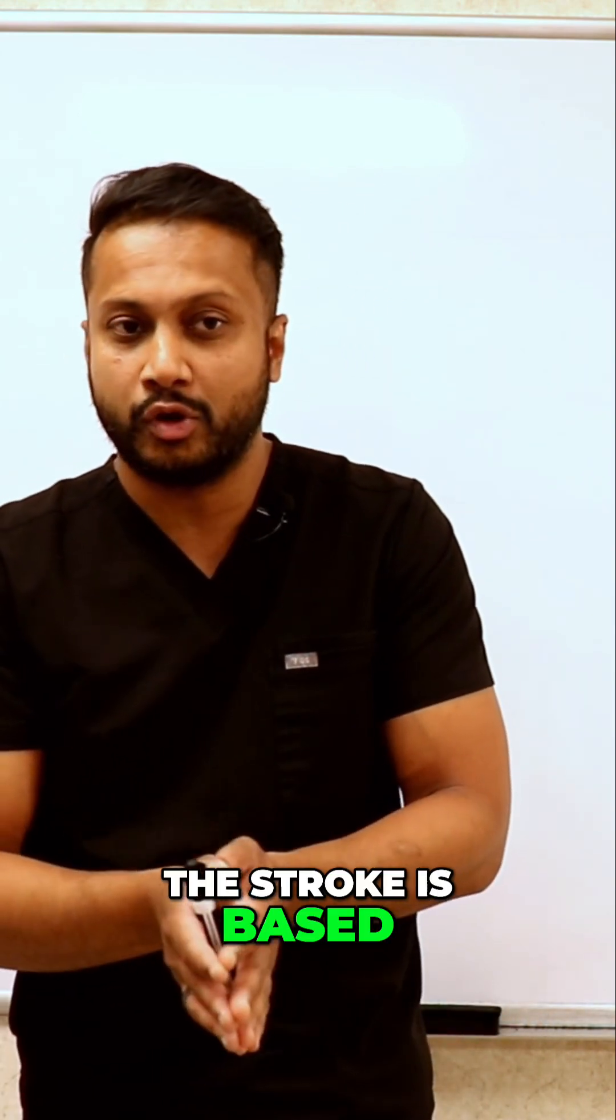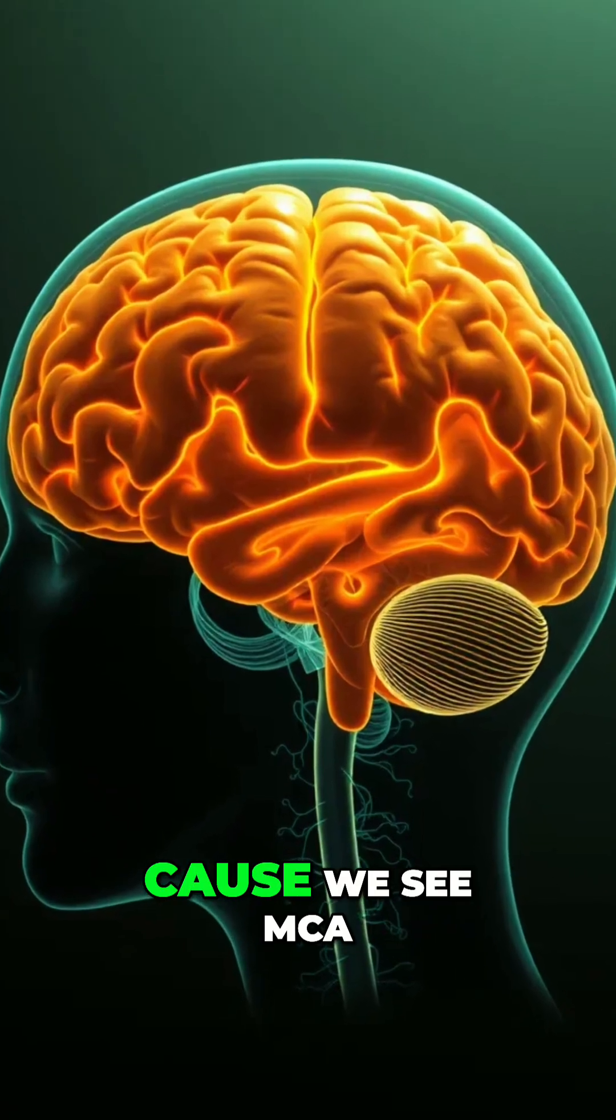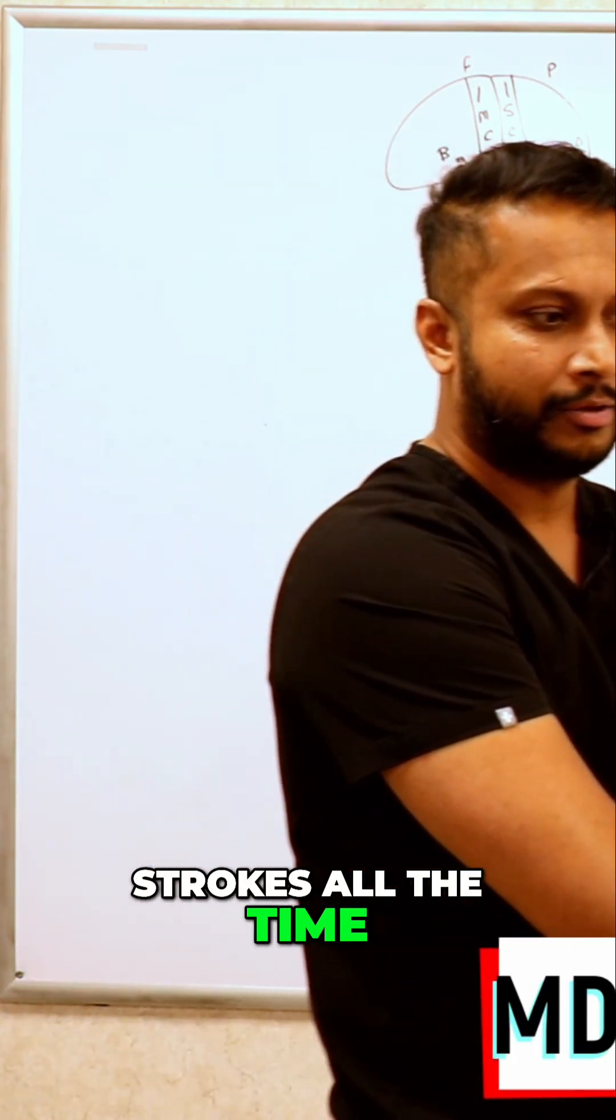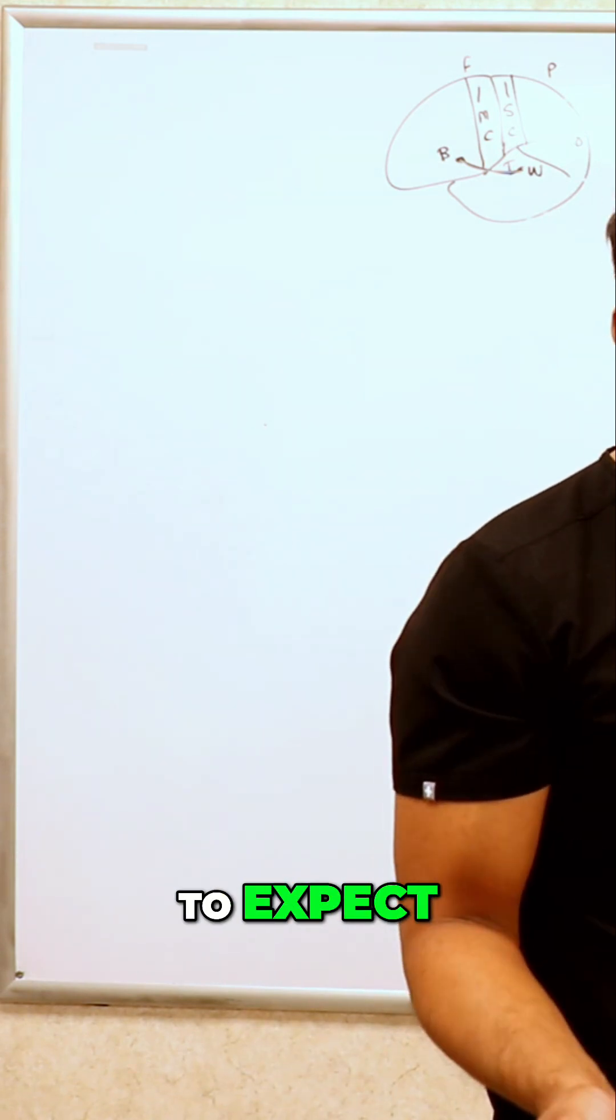Do you know where the stroke is based on when I tell you where the patient's symptom is? Now when it comes to strokes, if you have an MCA stroke, because we see MCA strokes all the time, we say the patient's got a large vessel occlusion of the MCA. What are you supposed to expect?